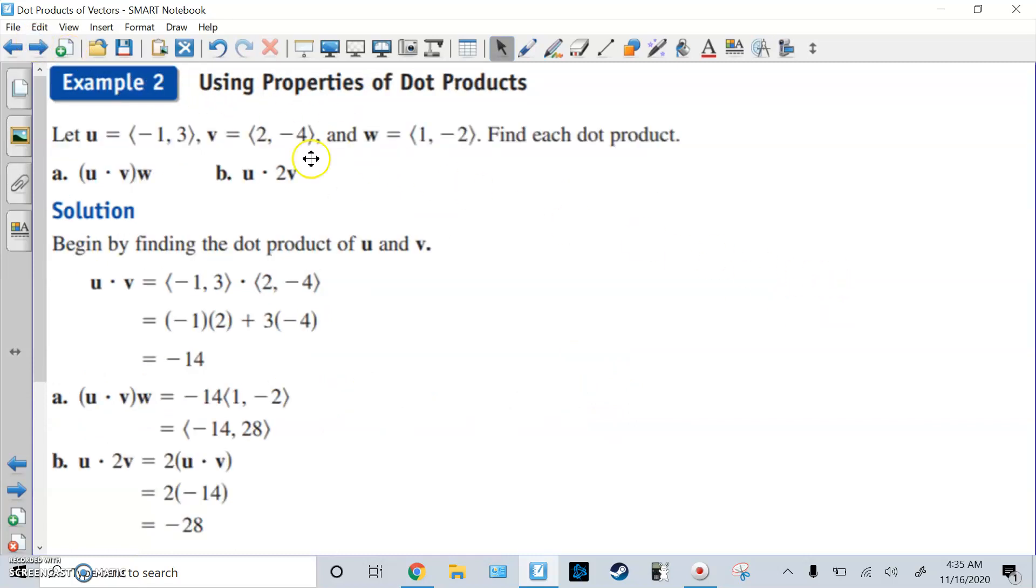Here's some more complicated ones. Here are three vectors. Find each dot product. First one is dot product U and V, and then times that by W. Now I do U and V first. I get negative 14. Then it's going to be negative 14 times W. Now this is a scalar times a vector. So a scalar times a vector just basically distributed in. Just multiply each part of each component of the vector by the scalar. So basically a dot product times another vector will still be a vector.